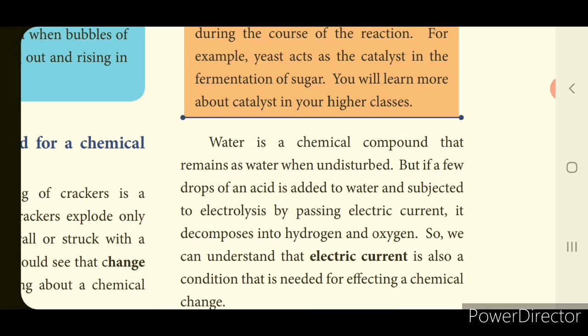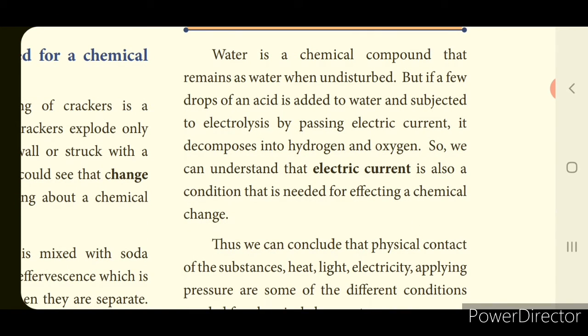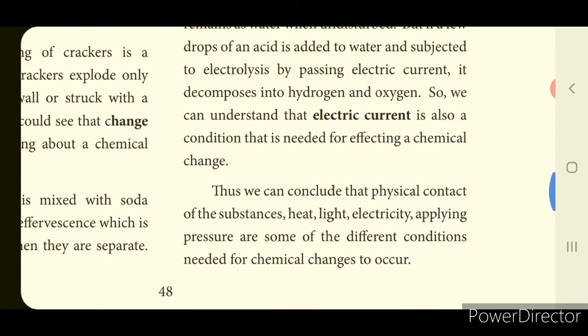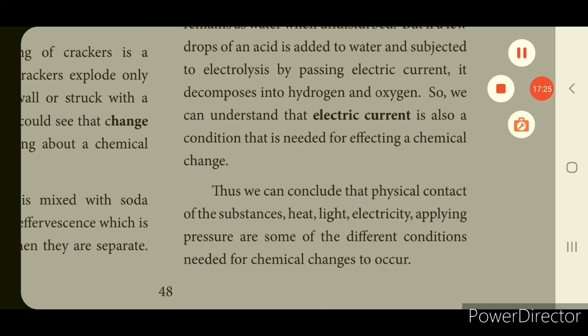Another condition for chemical change is electric current. A solution is formed by dissolving a solute (like salt or sugar) in a solvent (water). When you allow electricity to pass through a solution, separation of molecules occurs — this process is called electrolysis. Some chemical changes require electric current for conversion. In conclusion, the different conditions needed for chemical changes to occur are: physical contact of substances, heat, light, electricity, and applying pressure.